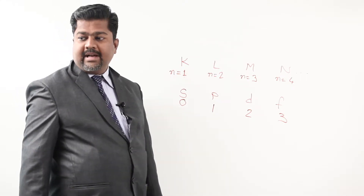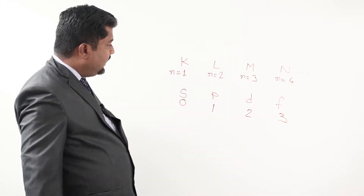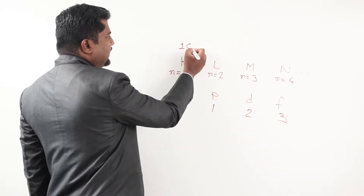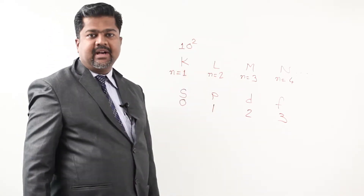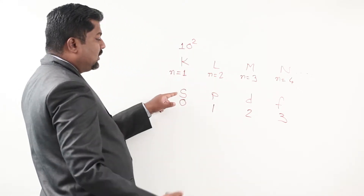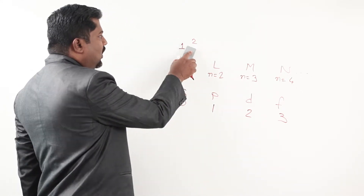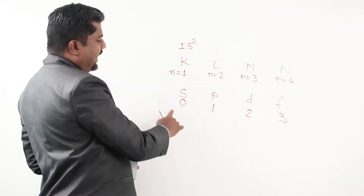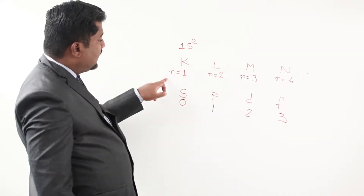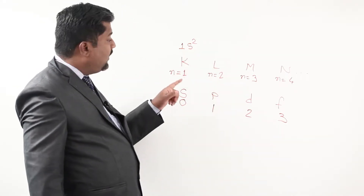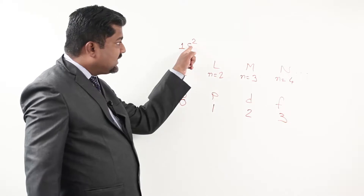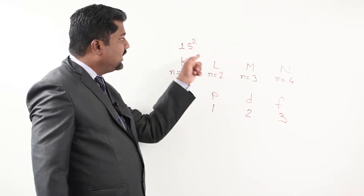I can't write electronic configuration using numbers like that — N equal to 1, subshell 0, and then number of electrons — because you may read '1 0 2' as '102'. In order to eliminate this confusion, zero number is given as S. So what I am writing is: 1S2. The meaning is: main shell is 1, subshell is S, and in that subshell there are 2 electrons.